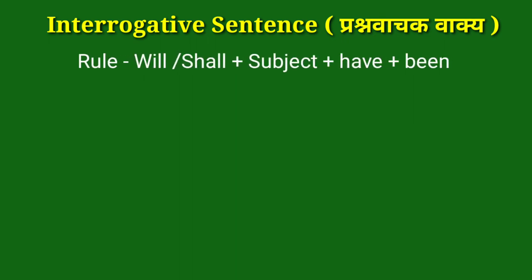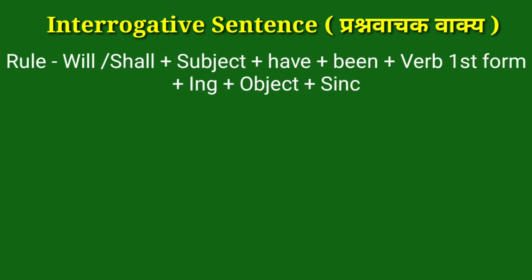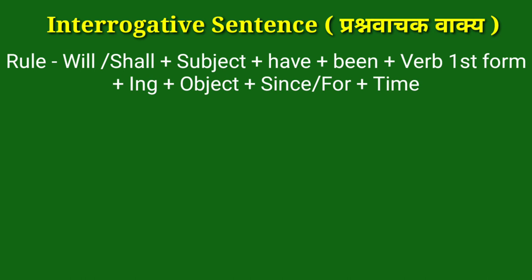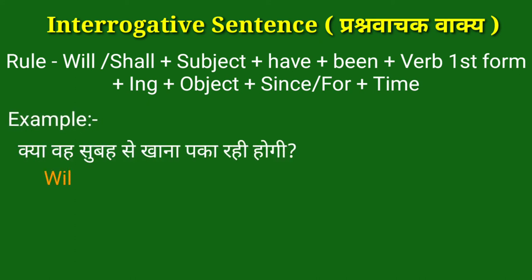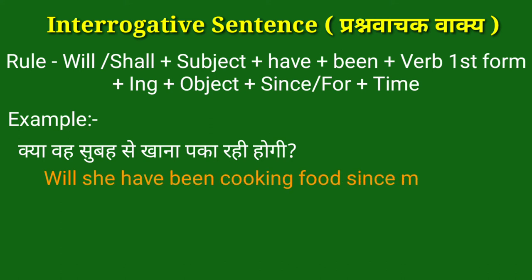Next is the interrogative sentence — प्रश्नवाचक वाक्य। For making this, we use: Will/Shall + subject + have + been + verb first form + ing + object + since/for. For example: क्या वह सुबह से खाना पका रही होगी? — Will she have been cooking food since morning? इस वाक्य में 'will have been' helping verb है, 'she' subject है, 'cooking' verb की first form + ing है, बाकी object है, 'since' का प्रयोग किया गया है और 'morning' हमारा time है।